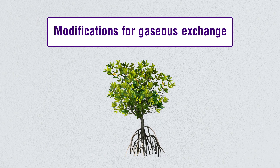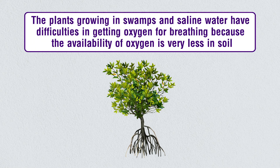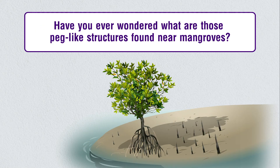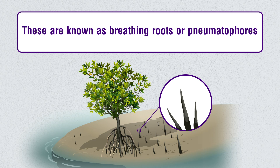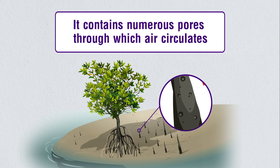Some plants growing in swamps and saline water have difficulty getting oxygen for breathing, because oxygen availability is very low in the soil. Near mangroves, peg-like structures called breathing roots or pneumatophores can be found. These breathing roots help to take oxygen from the atmosphere through numerous pores through which air circulates.